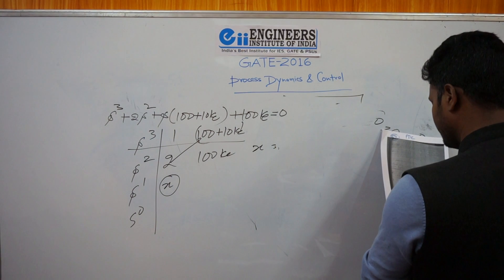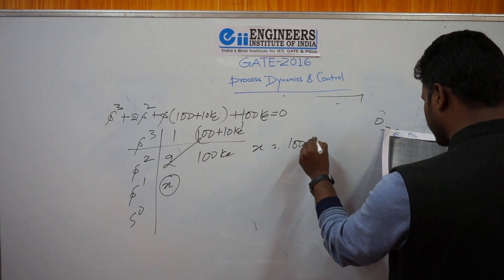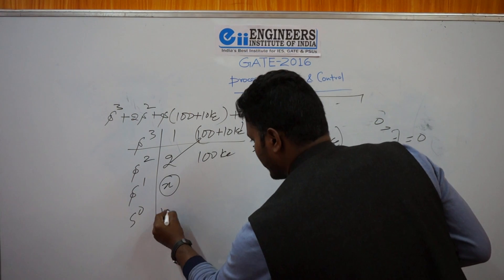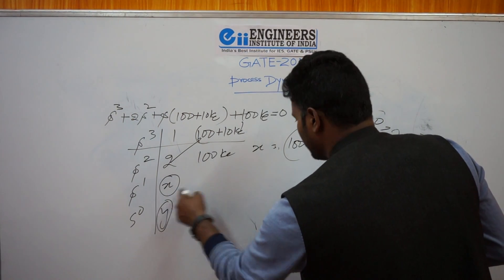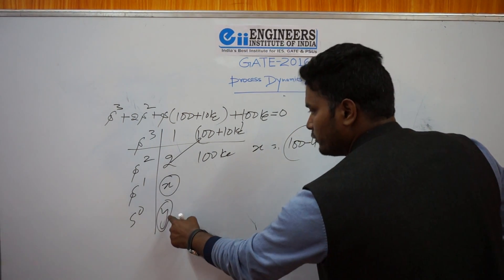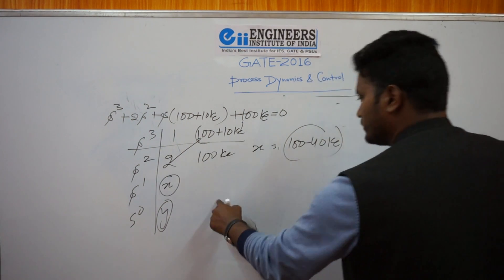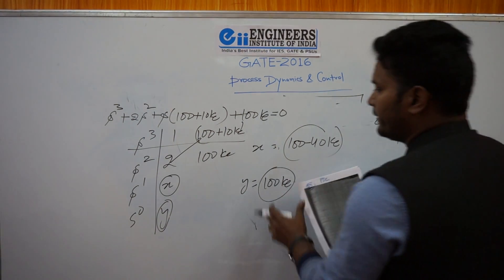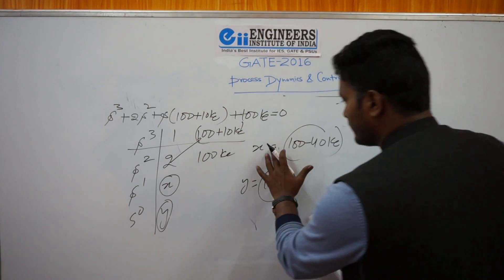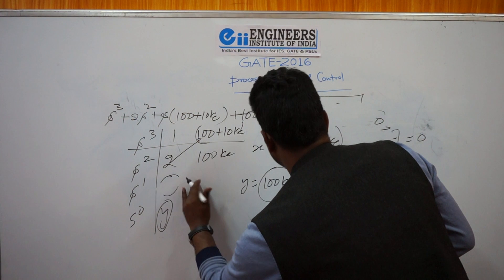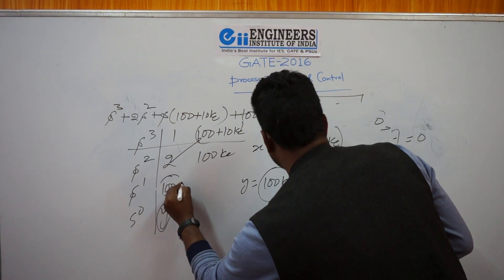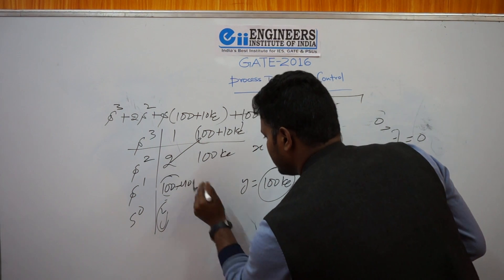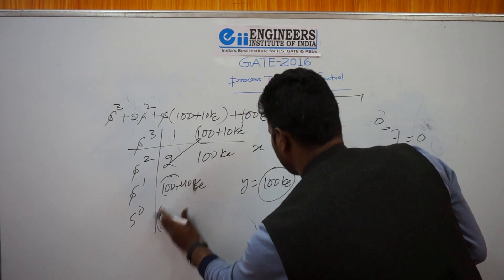Compute the s¹ row element, calling it x. x equals 2 times (100 plus 10·Kc) minus 1 times 100·Kc, all divided by 2. This simplifies to 100 minus 40·Kc. Call this value y. From the Routh array the s⁰ row y is simply 100·Kc. So putting all values: x equals 100 minus 40·Kc, and y equals 100·Kc.